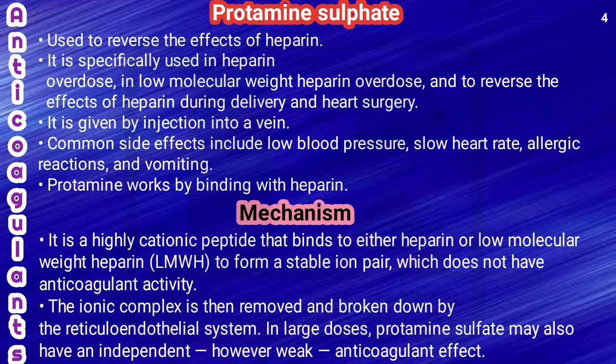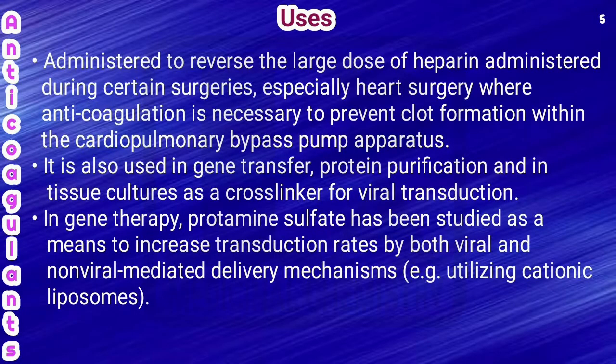The mechanism of protamine sulfate: it is a highly cationic peptide that binds to either simple heparin or low molecular weight heparin to form a stable ion pair, which has no anticoagulant activity. This complex is then removed and broken down by the reticuloendothelial system. In large doses, protamine sulfate may have an independent and weak anticoagulant activity.